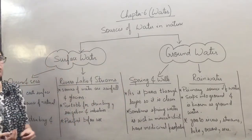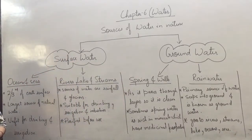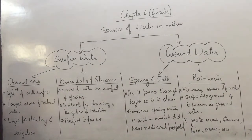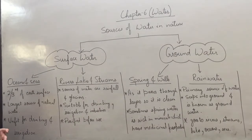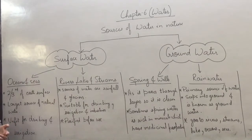Surface water means the water that is present on the surface of the earth, like seas, oceans, rivers, streams, lakes, and ponds — the sources that we can see.